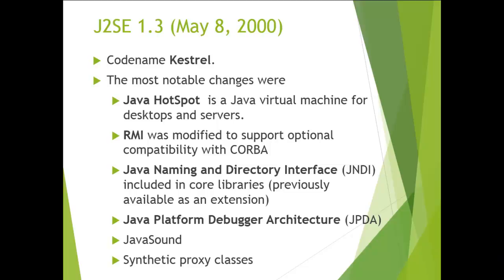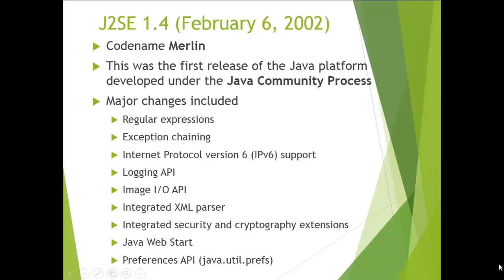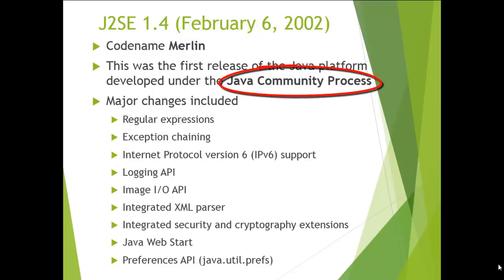The next version is J2SE 1.4, released on 6th February 2002, with the code name 'Merlin'. This was the first release of the Java platform developed under the Java Community Process. Major changes included regular expressions, exception chaining, IPv6 support, logging API, image I/O API, integrated XML parser, integrated security and cryptography extensions, Java Web Start, and Preferences API.